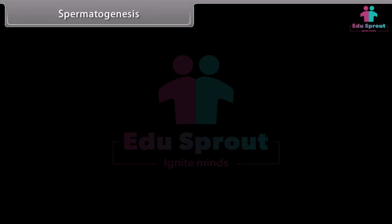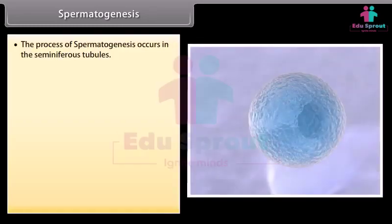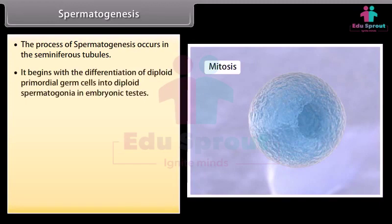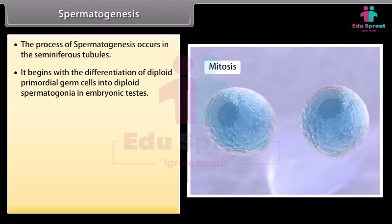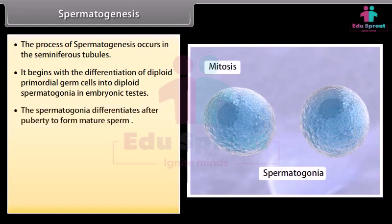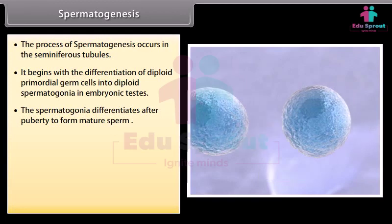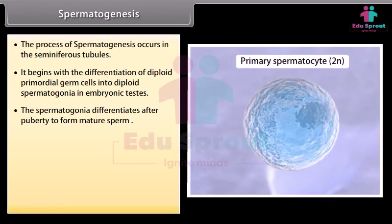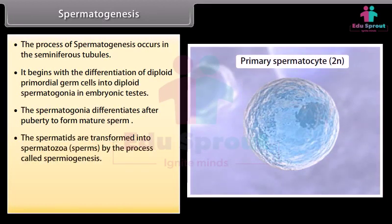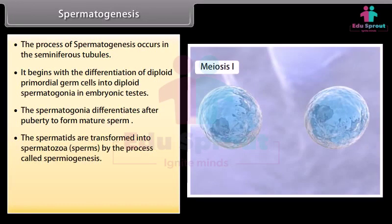Spermatogenesis occurs in the seminiferous tubules. It begins with the differentiation of diploid primordial germ cells into diploid spermatogonia in embryonic testes. The spermatogonia differentiates after puberty to form mature sperm. The spermatids are transformed into spermatozoa or sperms by the process called spermiogenesis.